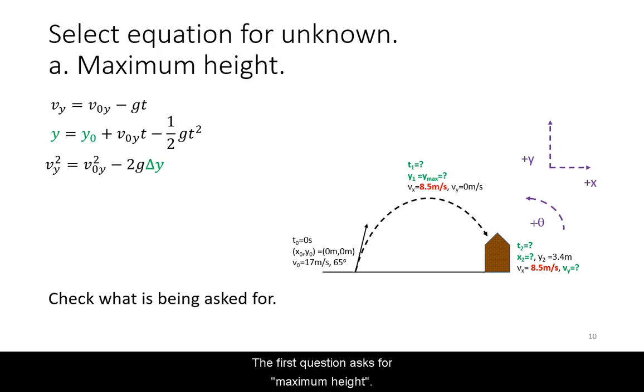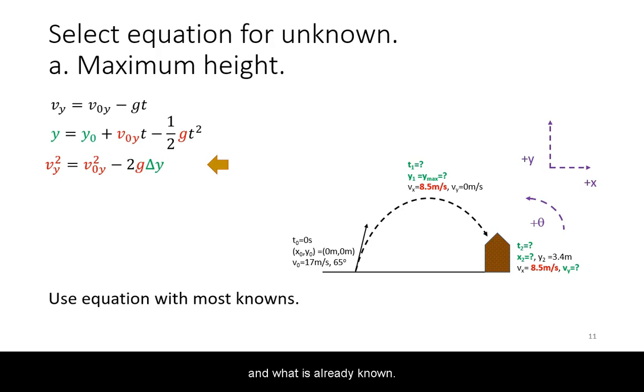The first question asks for maximum height. This is code for the vertical velocity being zero there. We select the equation based on what is being asked for and what is already known.